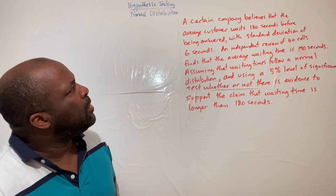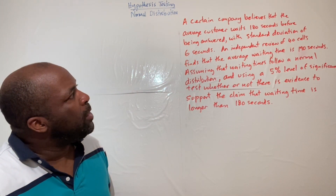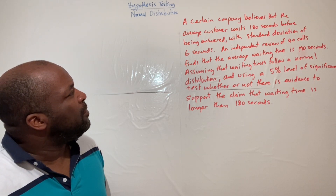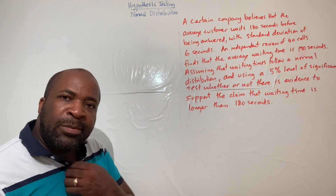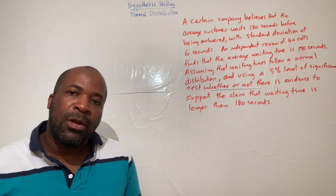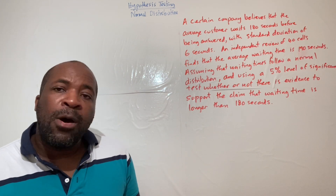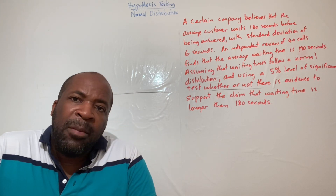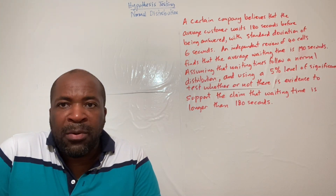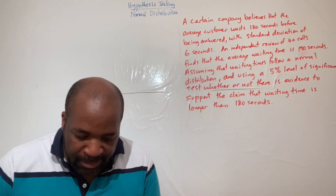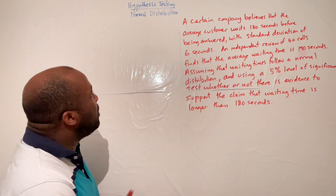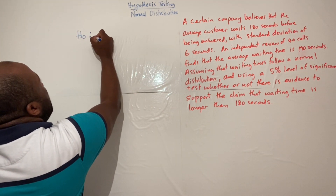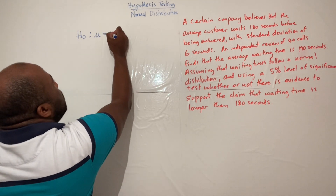We're told that a certain company believes the average customer waits 180 seconds before being answered, with a standard deviation of six seconds. This provides the historical record, which will form what we call our null hypothesis — a statement of what we believe is true based on past experience.